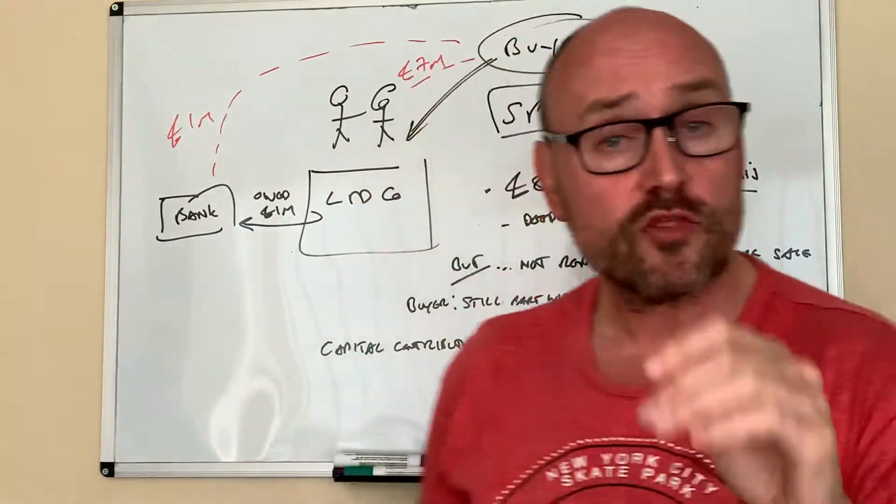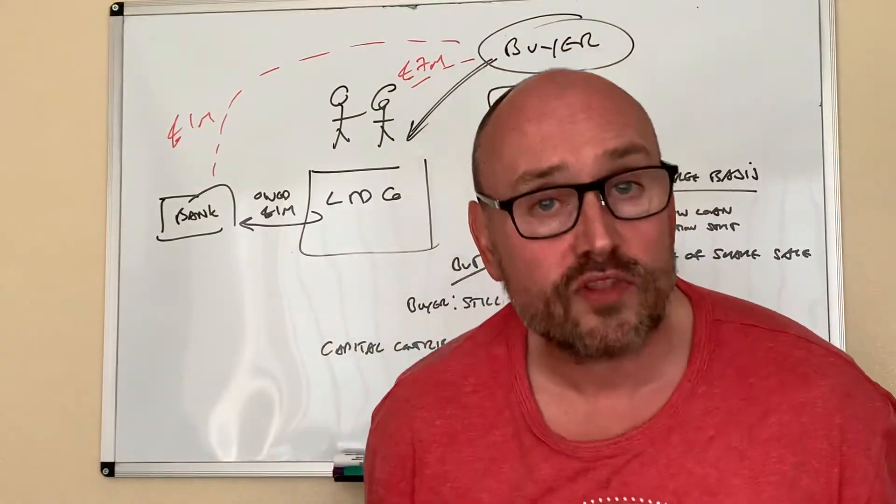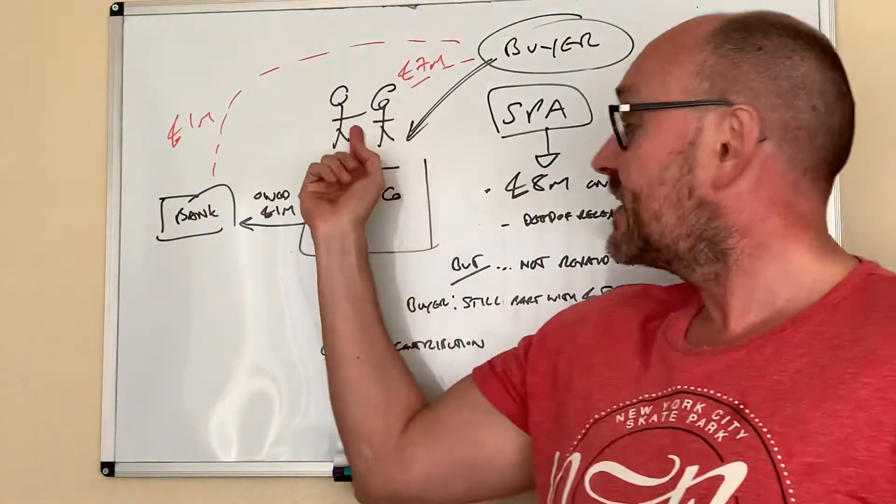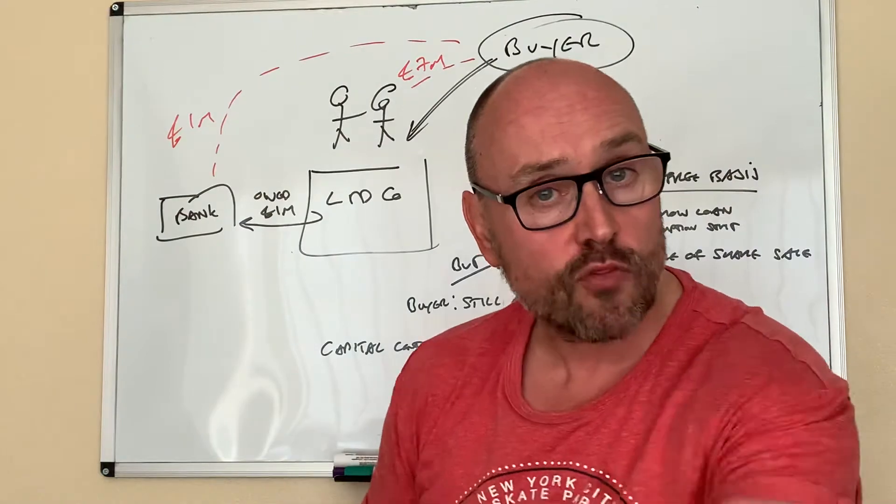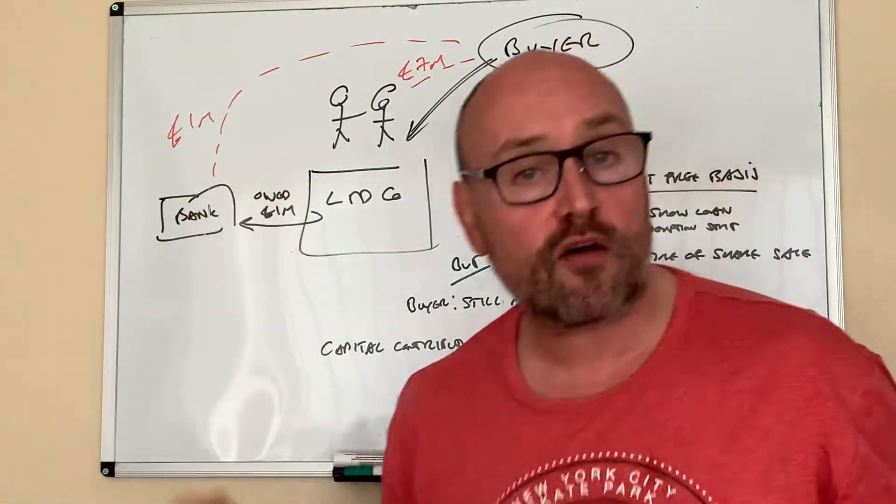So what happened was the buyer said, look, this is what we're going to do. We're still going to part with eight million pounds anyway, but we'll give the two ladies who own the company seven million pounds for their shares and we'll just pay off the bank loan.